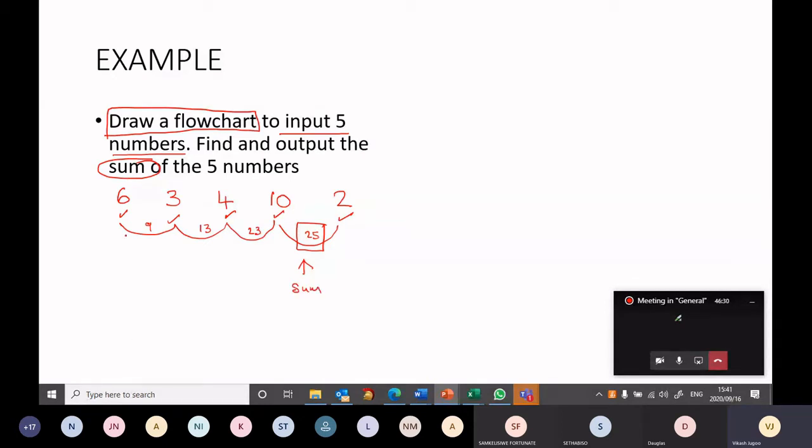In approaching this question, you could use five separate input boxes with five separate variables. This is an input box. You could have five of those: input num1, input num2, input num3, input num4, and input num5. And then you could say sum equals num1 plus num2 plus num3 plus num4 plus num5, and then just print the sum. That will solve this question.